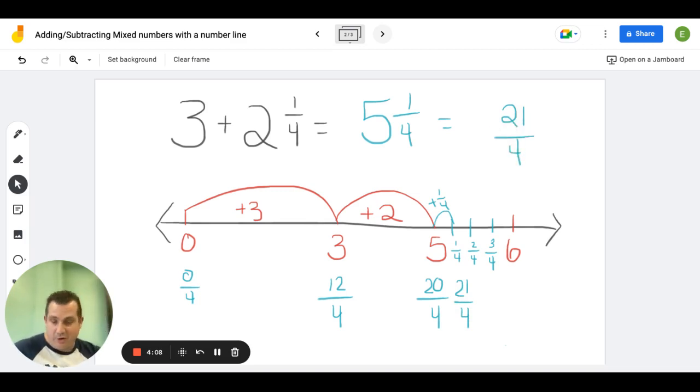Remember, when we've gone over converting a mixed number into an improper fraction: 4 times 5 is 20, plus 1 is 21, over 4. 21 over 4. So I'm going to erase that and leave us right here.